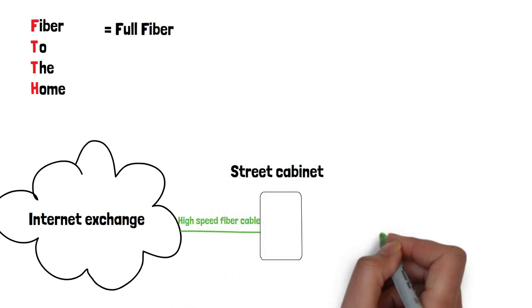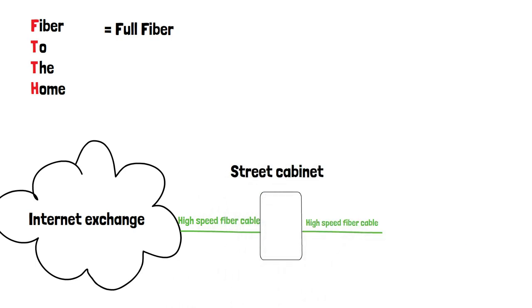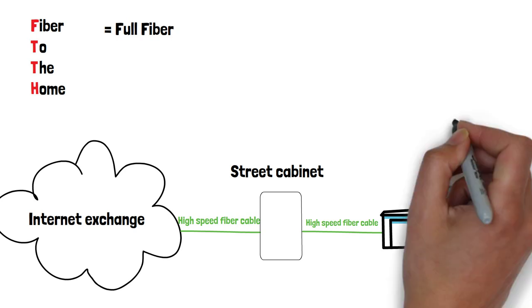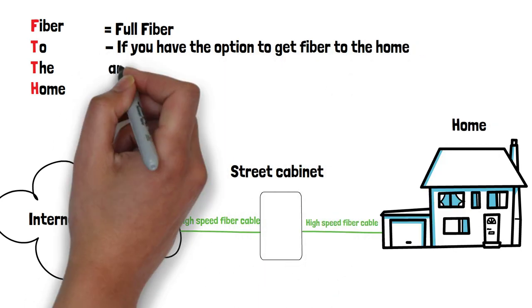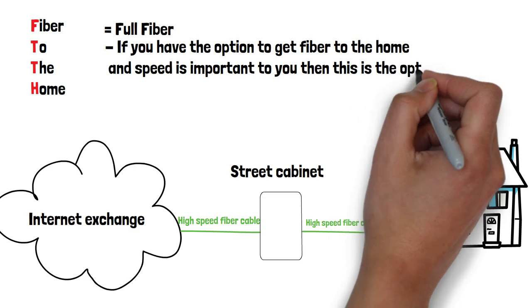FTTH delivers the fastest and most reliable internet speeds, as data travels over fiber optic cables all the way to the customer's premises without any copper wires at all in between. If you have the option to get fiber to the home and speed is important to you, then this is the option for you.